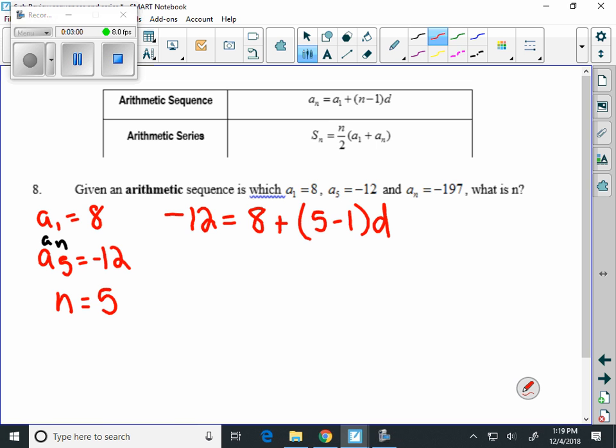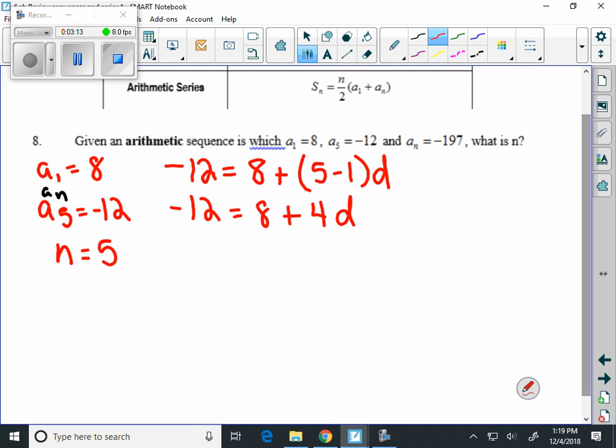We're trying to figure out what the common difference is. And then we can figure out what the value of n is. Well if we simplify a little bit, we get negative 12 equals 8 plus 5 minus 1 is 4d. And we're going to subtract 8 from both sides.